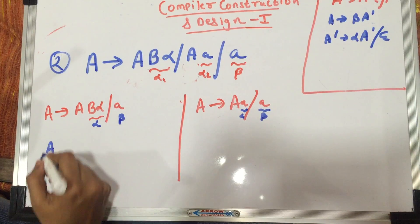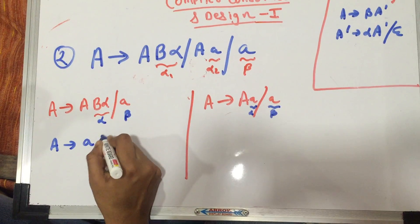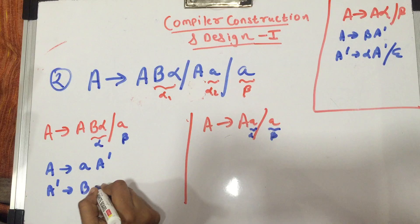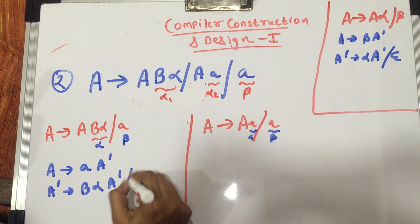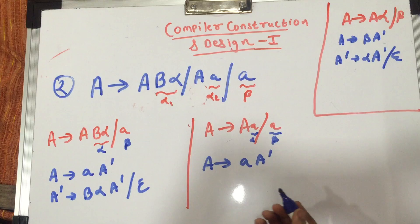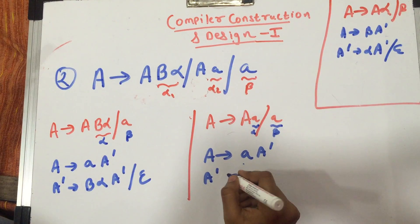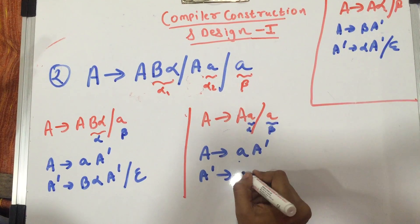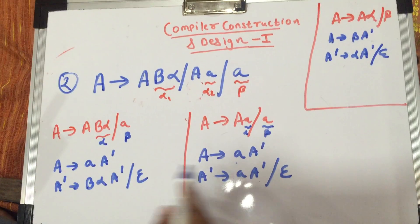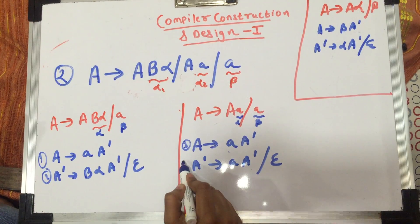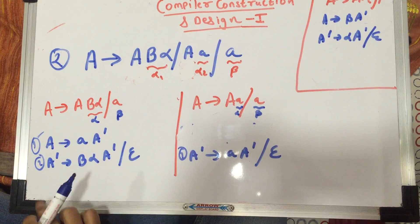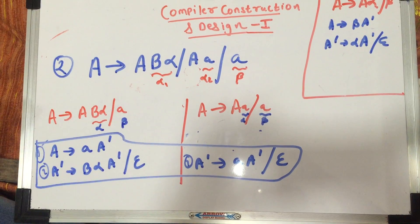So here the answer would be, to this problem, would be that A gives you A A dash, and A dash gives you alpha A dash slash epsilon. So beta alpha A dash and A dash, and A dash gives you alpha A dash, that is AA dash slash epsilon. And now you combine the two, and when you combine the two, 1, 2, 3, 4, you find that 1 and 3 are absolutely the same thing. So you eliminate one of these, and our final answer would be these three.